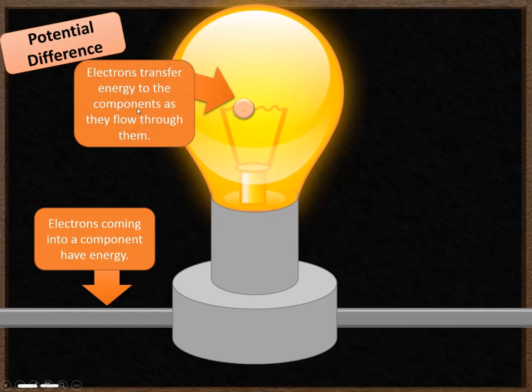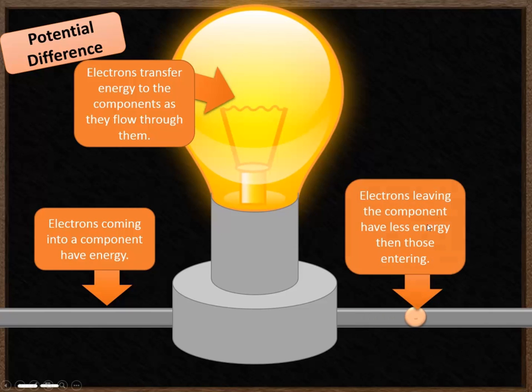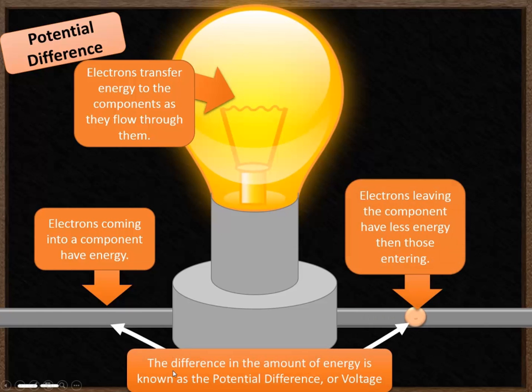The electrons transfer energy to the components. The electron does some work on the light bulb. It heats up the filament of the light bulb, making it glow. So when they come out of the other side of the component, they have less energy than the electrons had when they entered the light bulb or the component. The difference in the amount of energy that those electrons have is known as the potential difference or the voltage. Note the word difference. It's how much the energy has gone down by through that component.